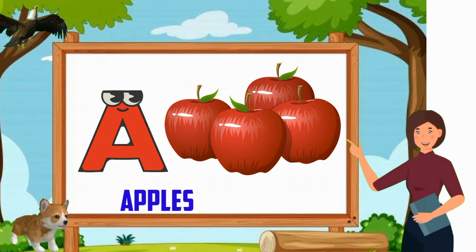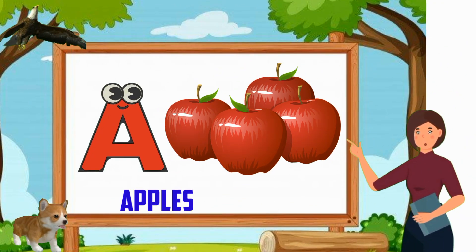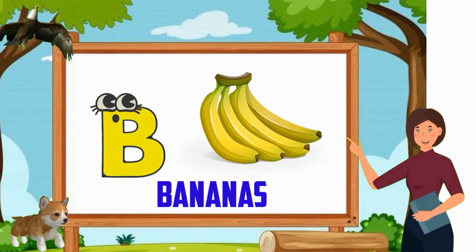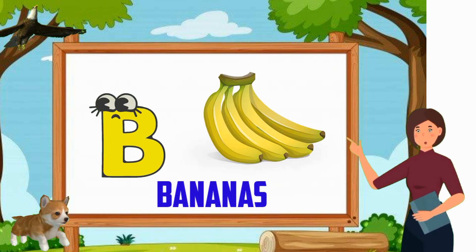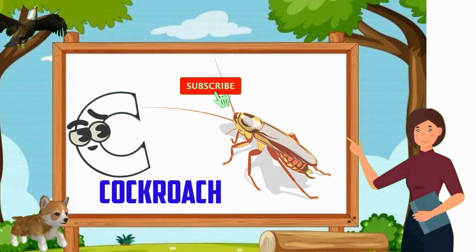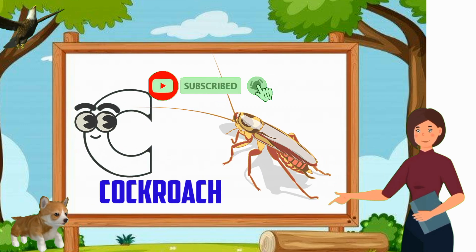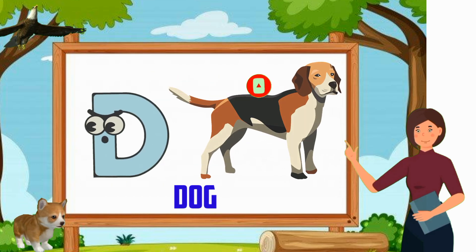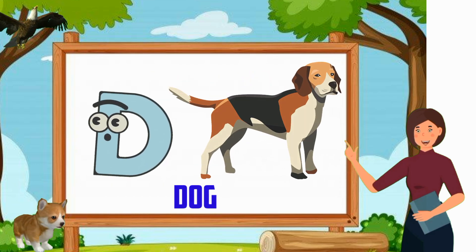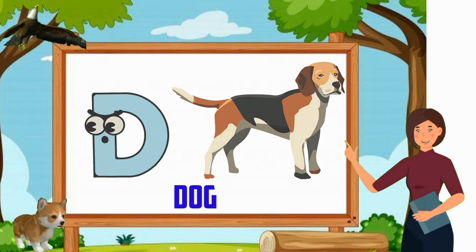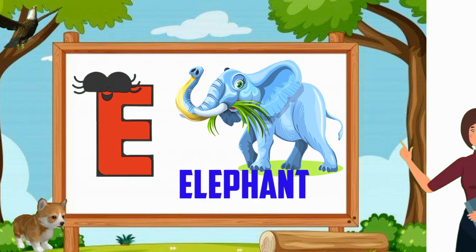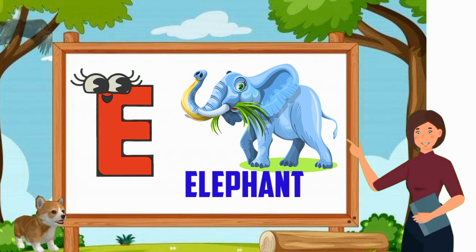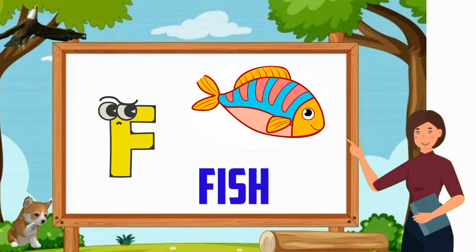A for apple. B for banana. C for cockroach. D for dog. E for elephant. F for fish.